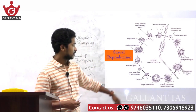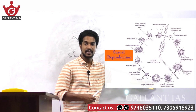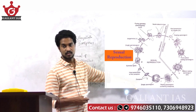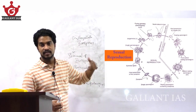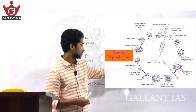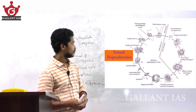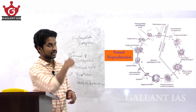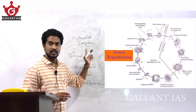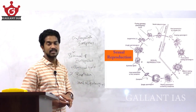These zoospores are liberated by rupturing the wall of the sporangia. The zoospores find a new host and when they come in contact with it, they penetrate into the host cell and become a zoospore. This is the life cycle of sexual reproduction of Synchytrium.